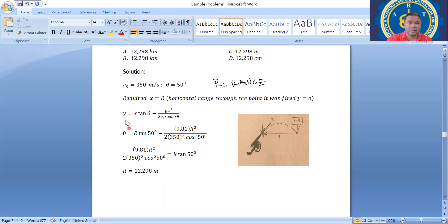y equals x tangent theta minus gx squared over 2v₀ squared cosine squared theta. If the required is the range, then y is 0. That's the standard, so be careful. If the range is required, y is zero. Take note of that one. So we have to substitute y equals 0.